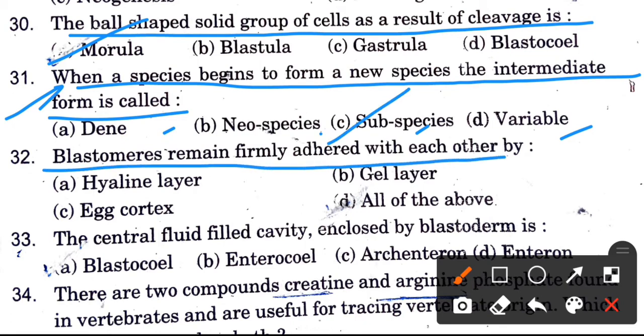Blastomeres remain firmly adhered with each other — blastomeres are attached with the help of — options are hyaline layer, gel layer, egg cortex, and all of the above. The answer is hyaline layer.